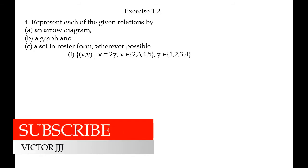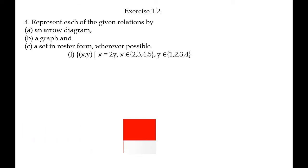First sub-question: set builder form, x, y such that x equal to twice of y. X belongs to {2, 3, 4, 5}, Y belongs to {1, 2, 3, 4}. X equal to twice of Y.